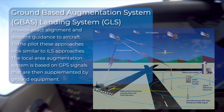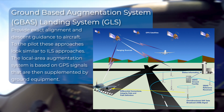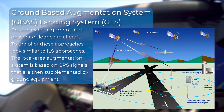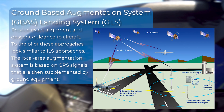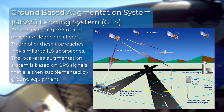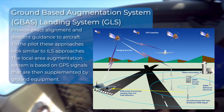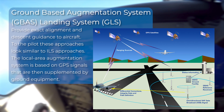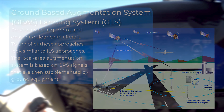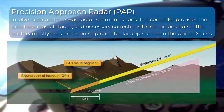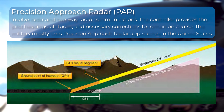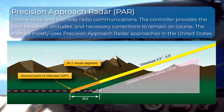Ground-based augmentation system approaches provide exact alignment and descent guidance to aircraft. To the pilot, these approaches look similar to ILS approaches. The local area augmentation system is based on GPS signals supplemented by ground equipment. Precision approach radar approaches involve radar and two-way radio communications. The controller provides the pilot headings, altitudes, and necessary corrections to remain on course. The military mostly uses precision approach radar approaches in the United States.